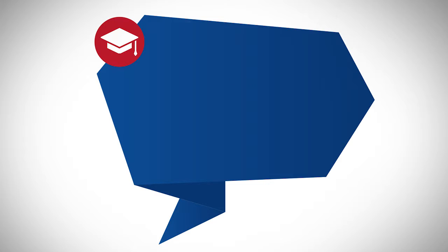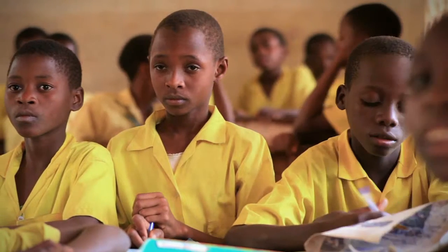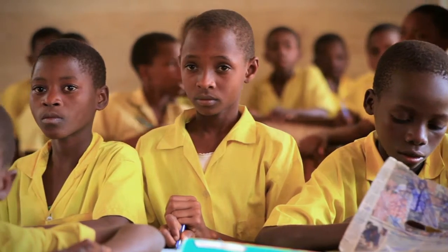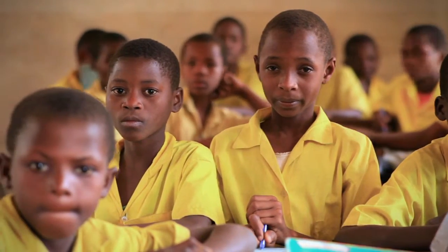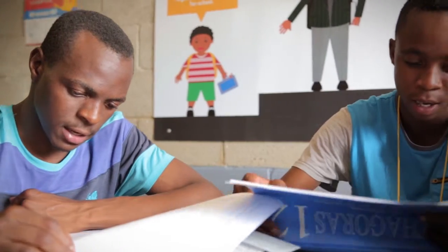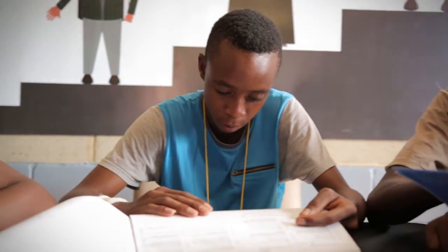Example of one of the topics your team could choose: Academic. The problem your team chooses to solve is poor academic results. Make it specific — choose a subject or grade you want to work on, as you've got a limited timeframe and you want to show the greatest impact. So let's say you choose maths in grade 8 as the subject where you want to see marks improve.